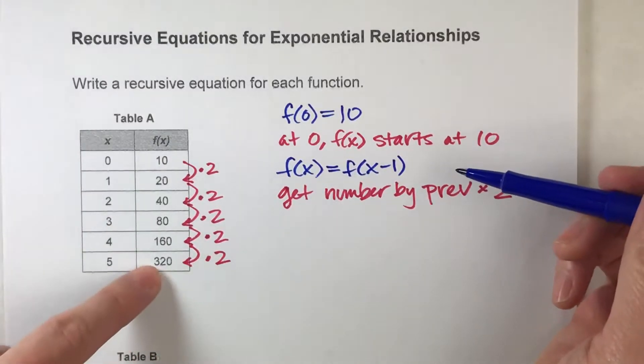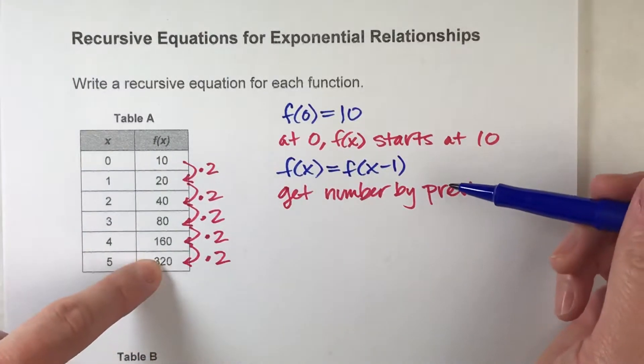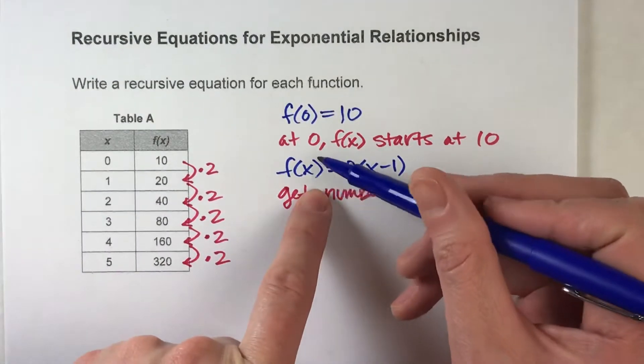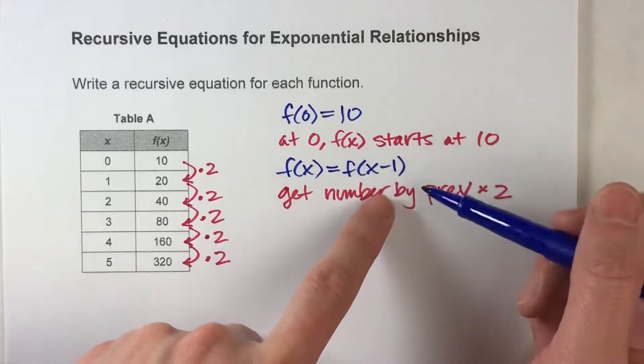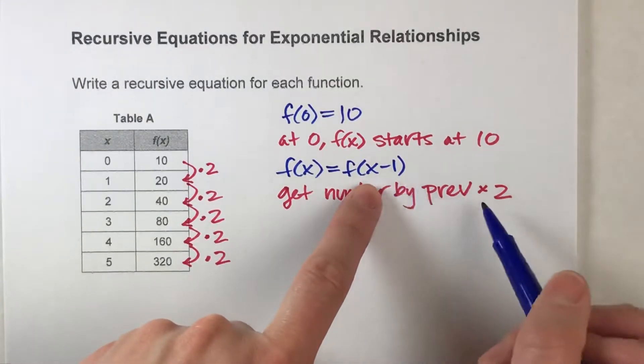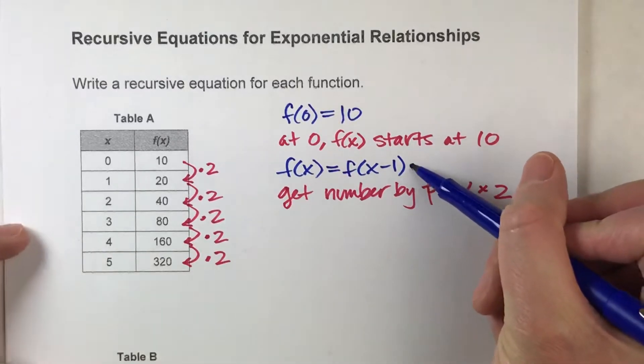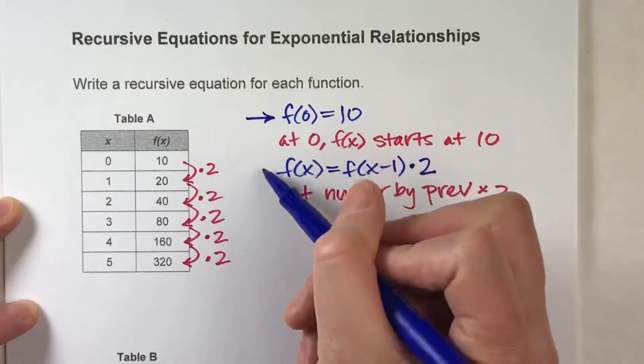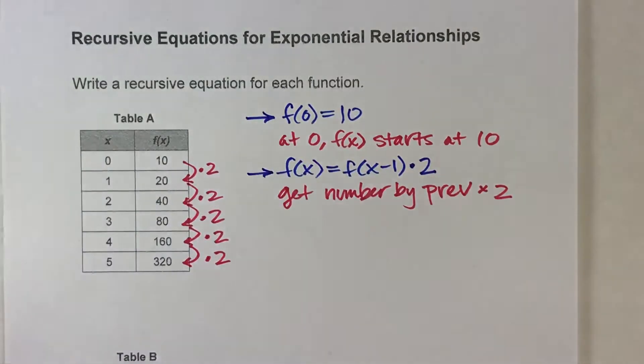Because if we're looking for f of five, for instance, we start by taking f of four. So whatever value we're looking for for f of x, the previous one is f of x minus one, but the pattern is we take that previous number and multiply it by two. So, this is our recursive equation.